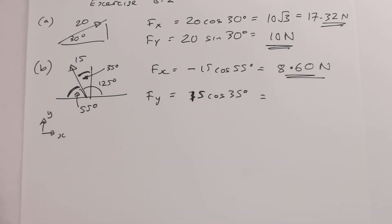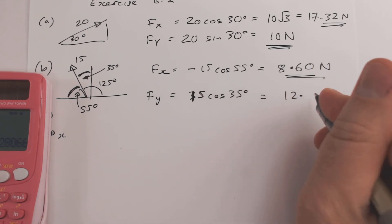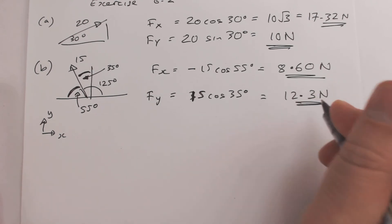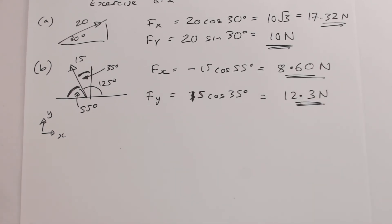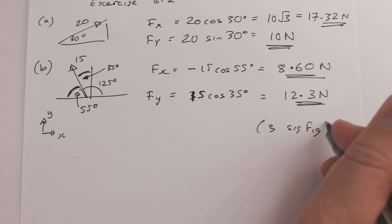Long summer, right. So 15 times cos 35, so that gives me 12.3 newtons. Okay, so what I'll do, what I've worked to three sig figs.